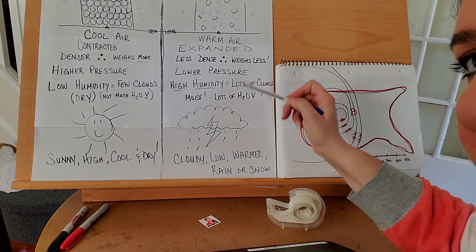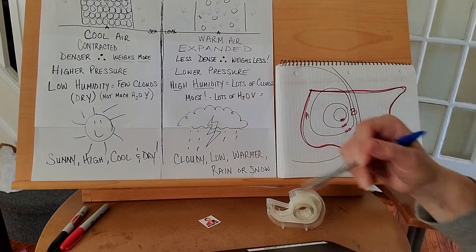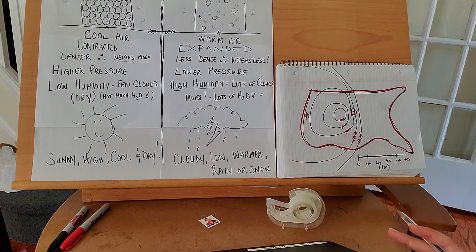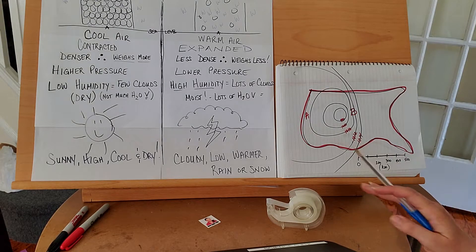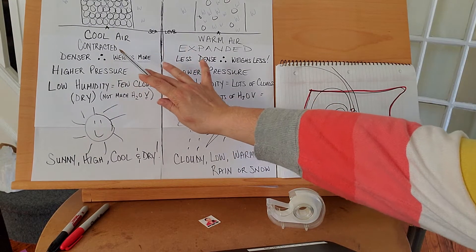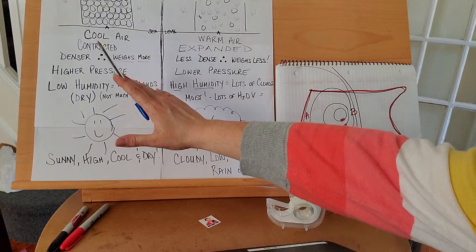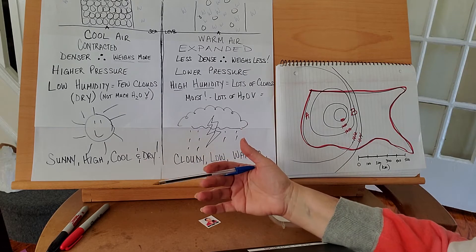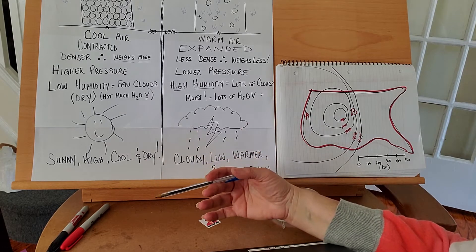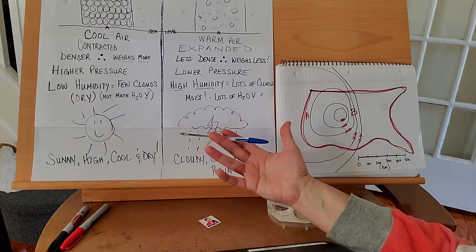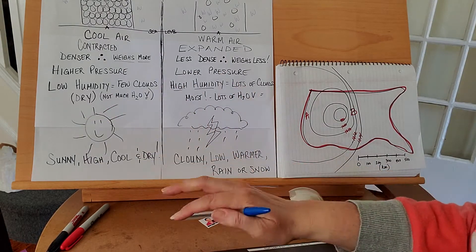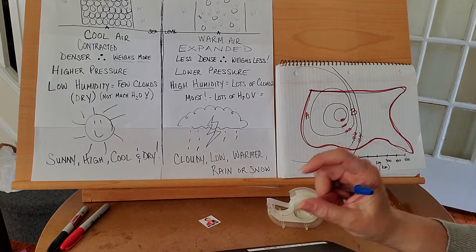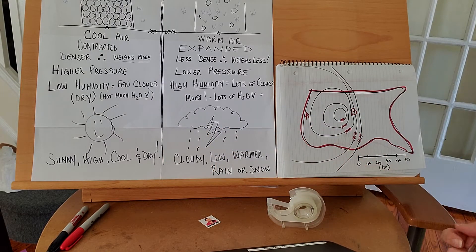Let's remind ourselves about the drawing we did two videos ago. It's all about weather variables — if the air is cool, it's contracted, weighs more, exerts higher pressure, keeps water vapor out, allows it to be sunny, high, cool, and dry. A lovely day if the air is just a little cooler than surrounding air.